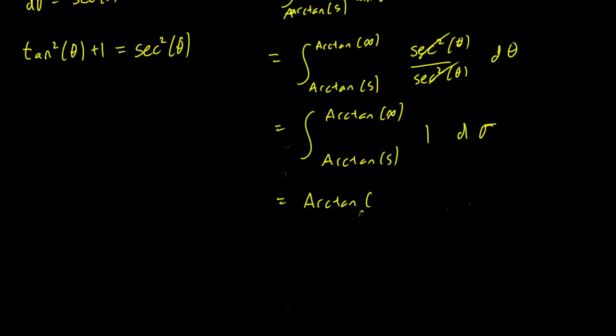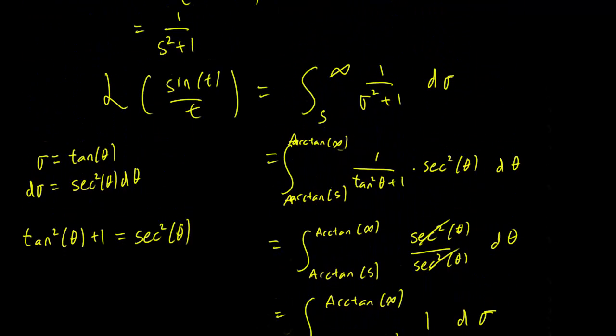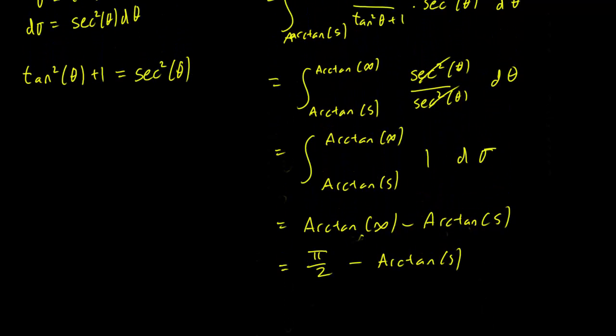And this is actually pretty easy, so we have arctan of infinity minus arctan of s. Arctan of infinity is just going to be pi over 2, of course. So we have the Laplace transform of sine t over t as pi over 2 minus arctan of s.